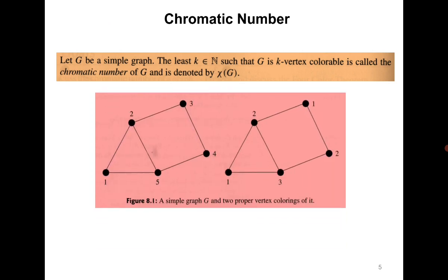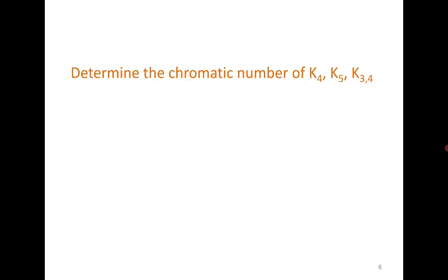For this graph, the chromatic number is 3. By intuition you can verify that this graph cannot be colored with one or two colors. As a quick exercise, try to find the chromatic number of K4, K5, and the complete bipartite graph K(3,4).